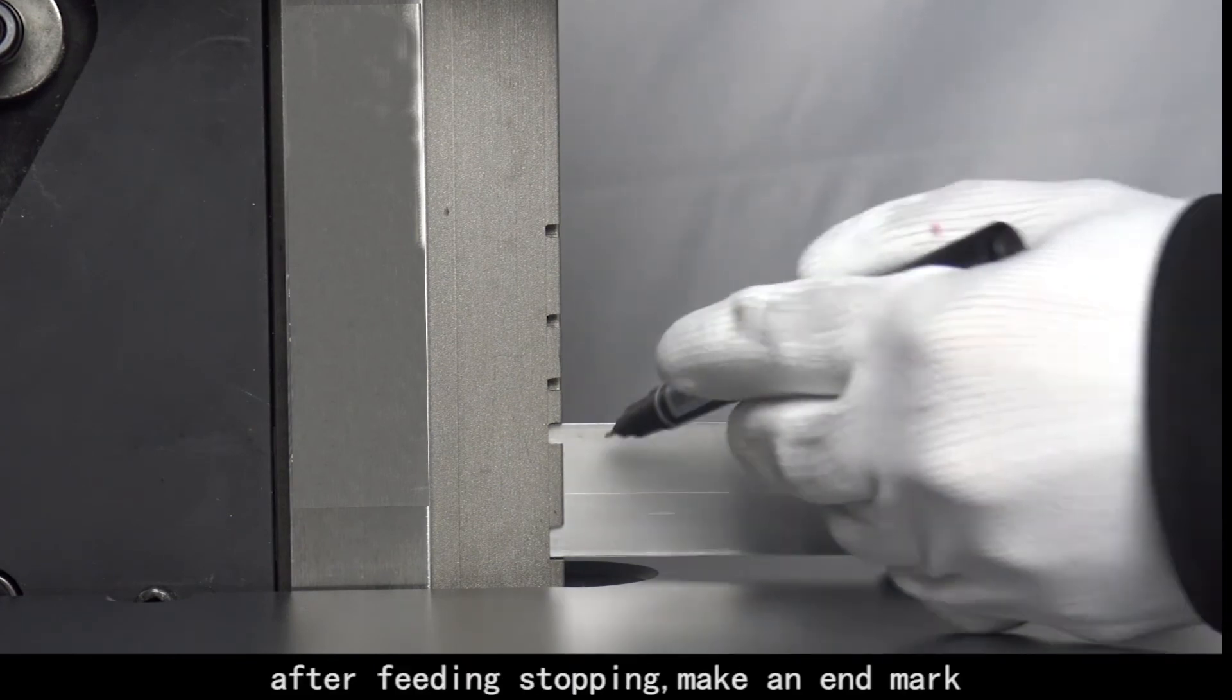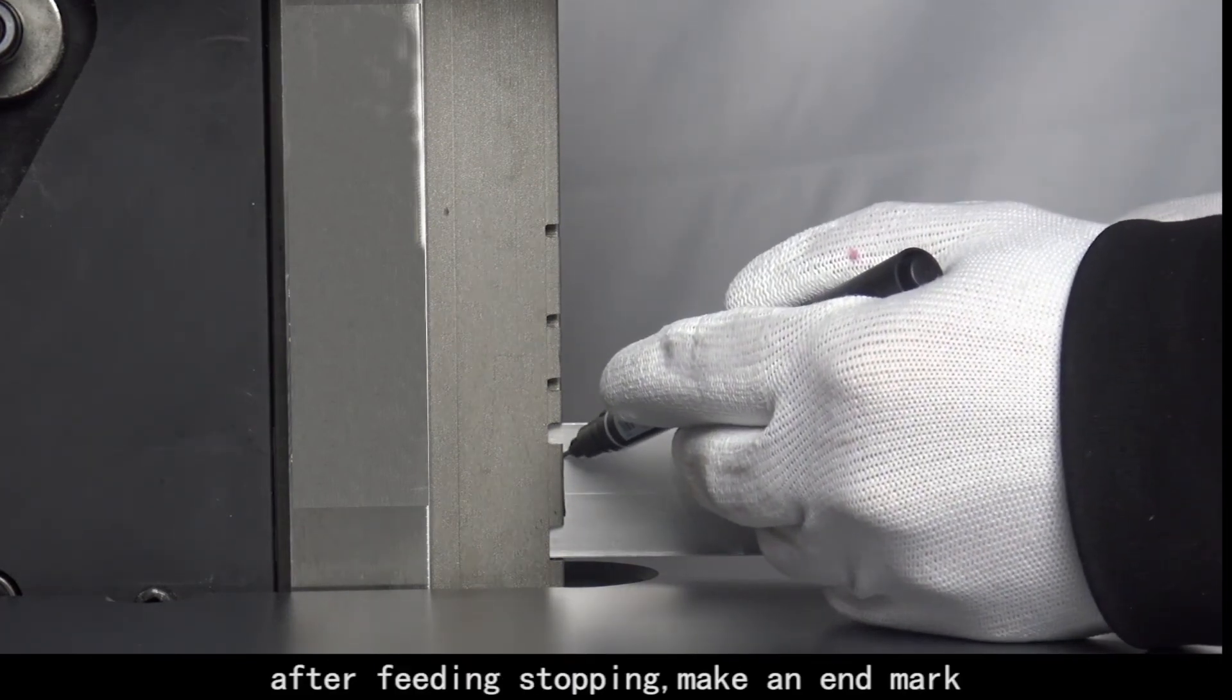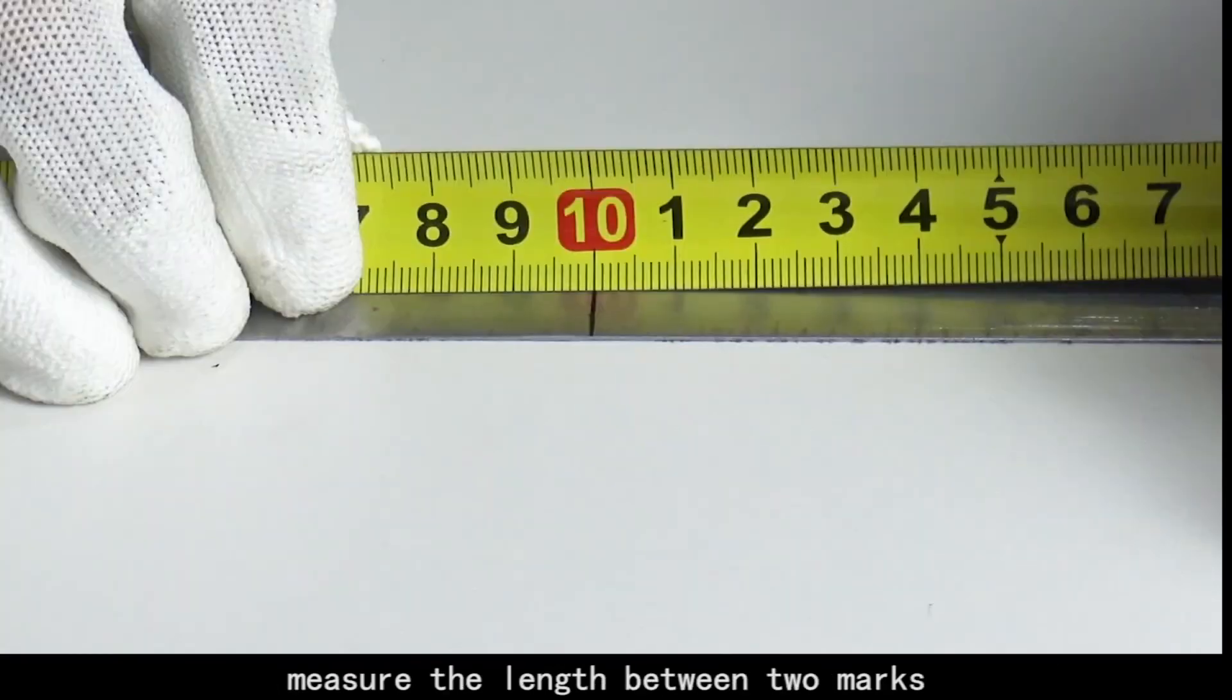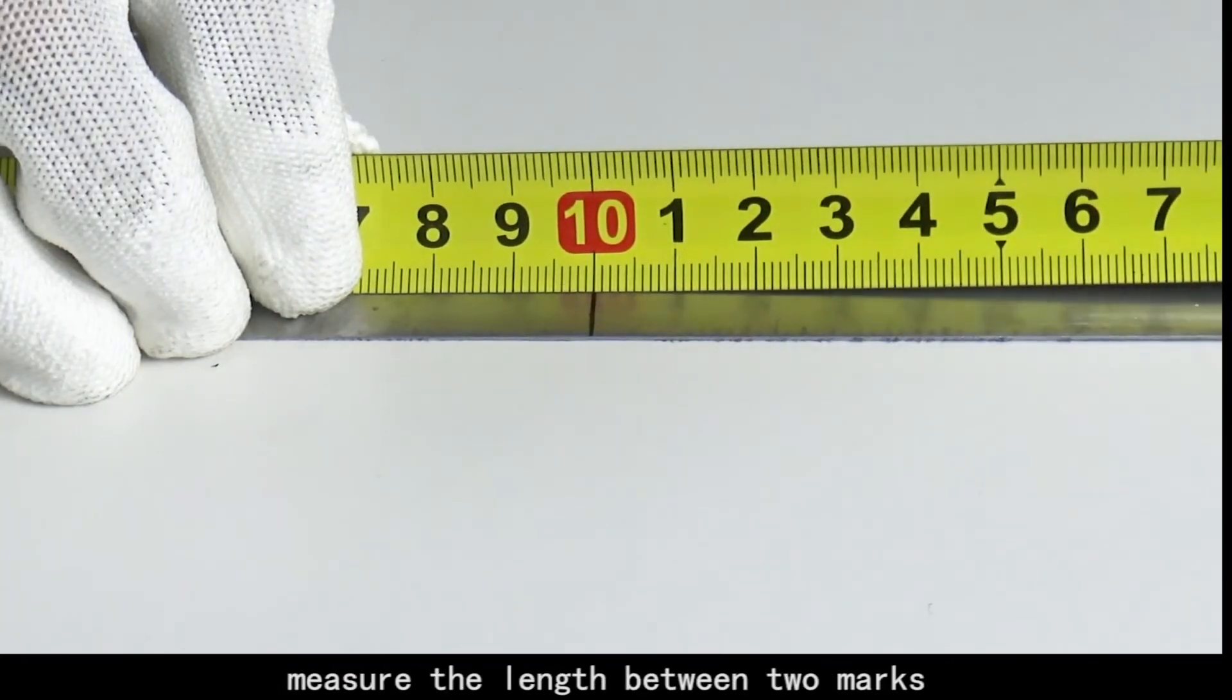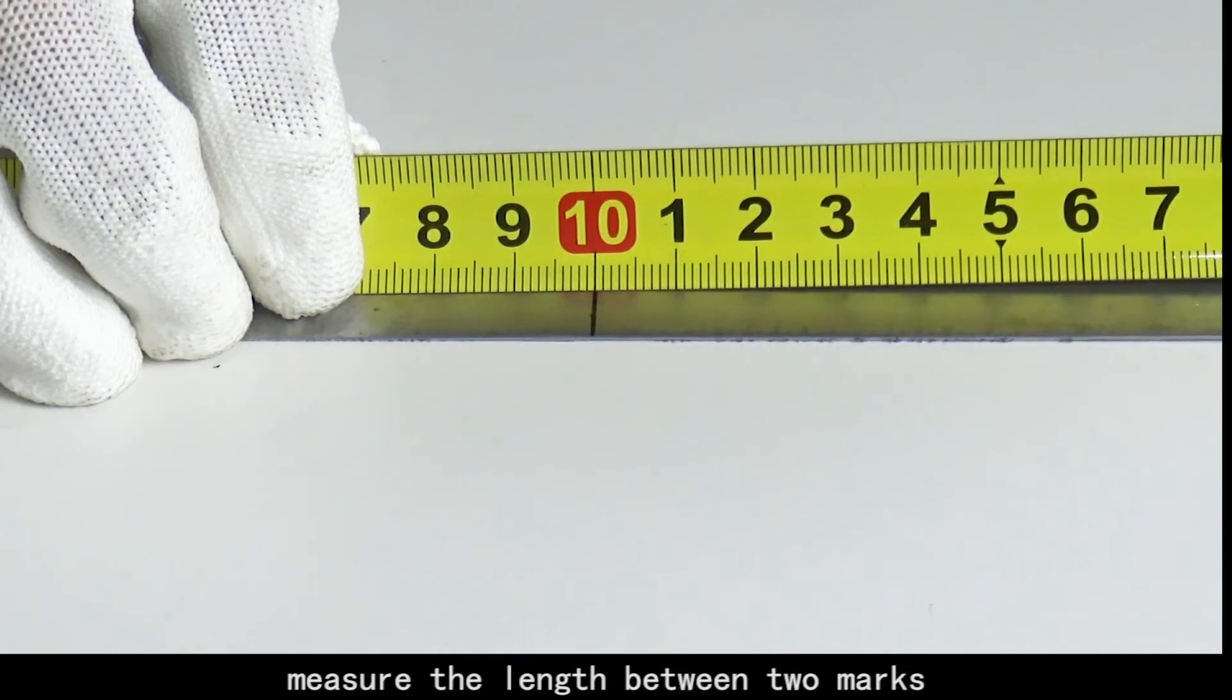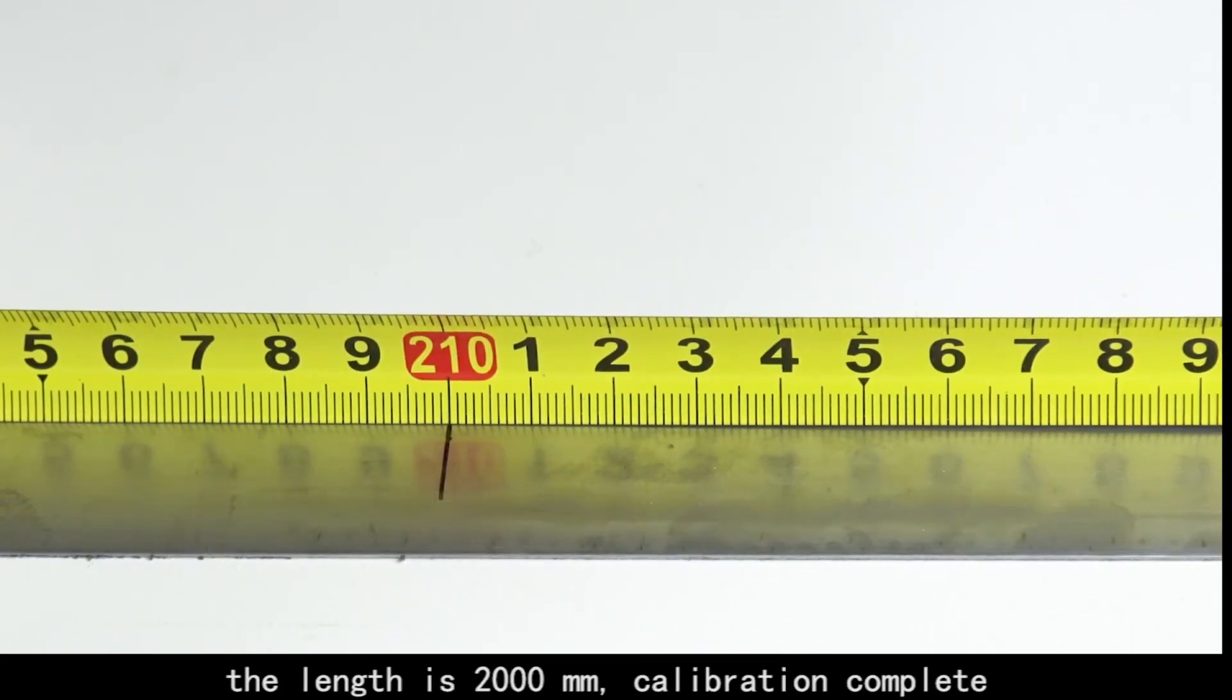After feeding stops, make an end mark. Measure the length between two marks. The length is 2000 millimeters.